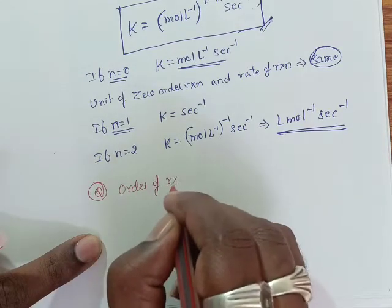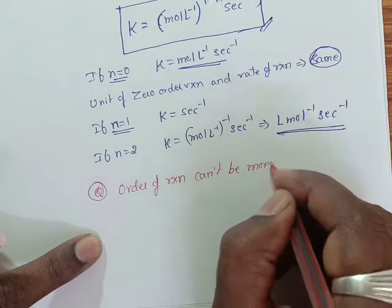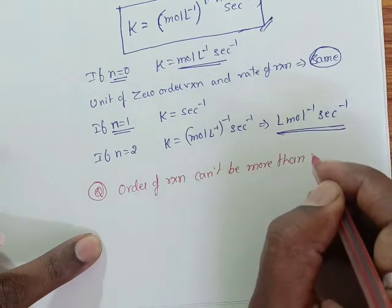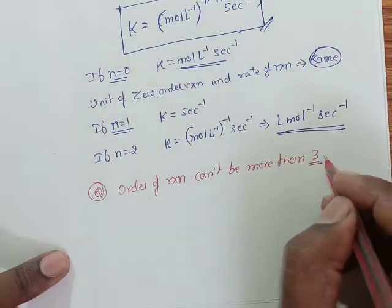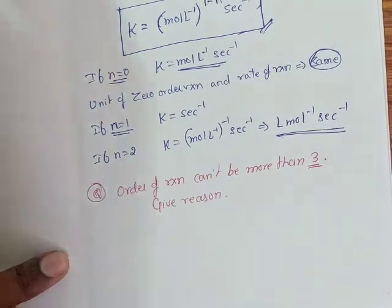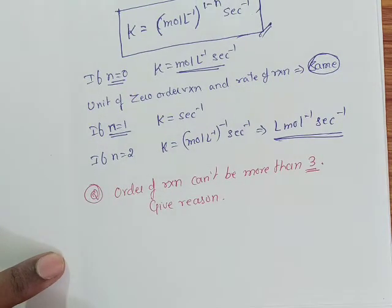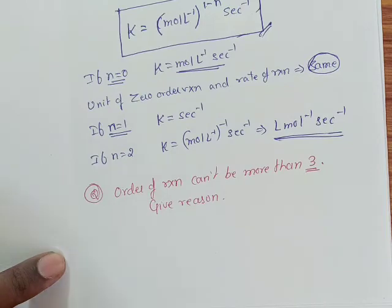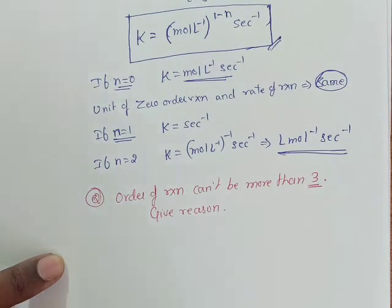Today's question: order of reaction cannot be more than 3 — give reason. Go through the textbook and find the answer. In the next class, I will give the answer. Thank you.